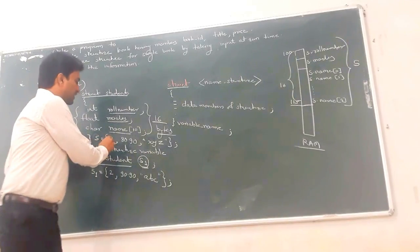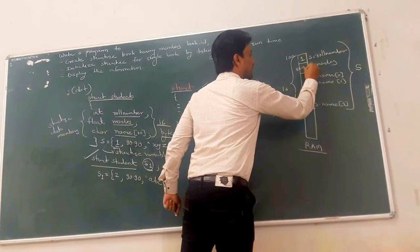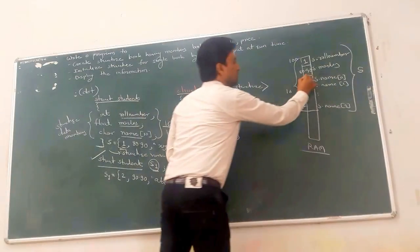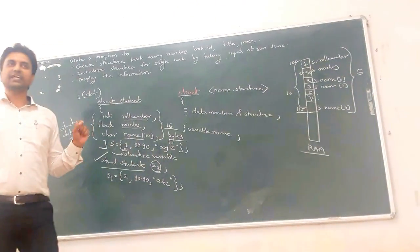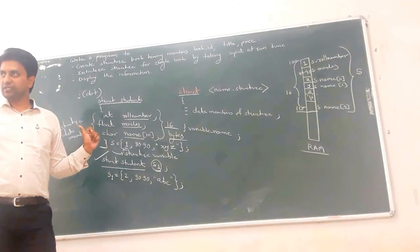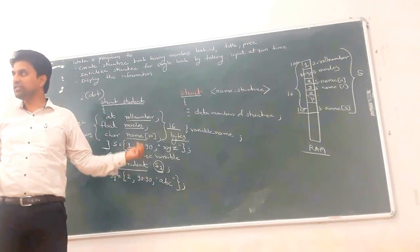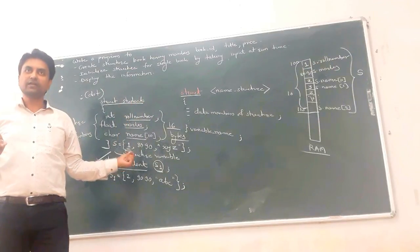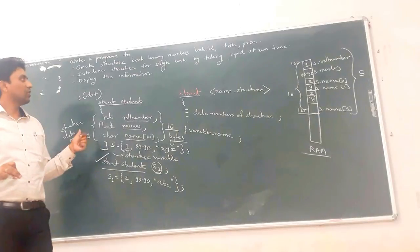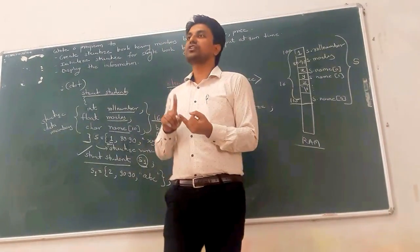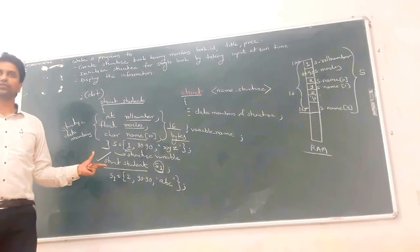When you write the value 1, the memory management stores 1 for roll number, 80.90 for marks, and XYZ — with '\0' automatically added by the compiler at the end of the string to indicate end of string (null character). This is called compile-time structure variable initialization. At the time of declaration, memory is reserved by the compiler, and when you initialize values, those values are saved at the particular memory location. Today we will stop here.